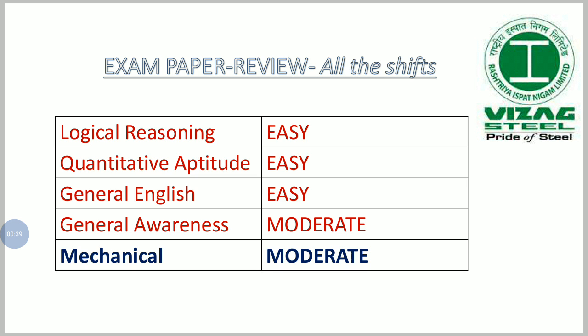In logical reasoning, most questions were from syllogism — for example, 'All A is B, All C is D, Some A is B' type syllogism questions. About 3 to 4 syllogism questions were asked, along with Venn diagram questions.